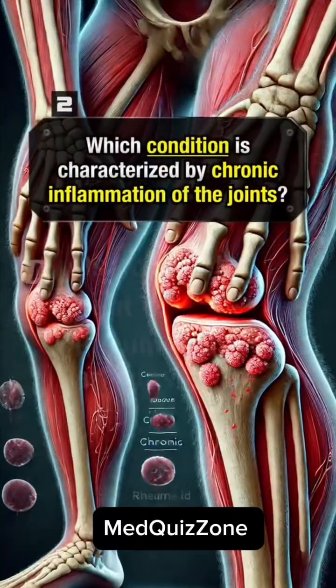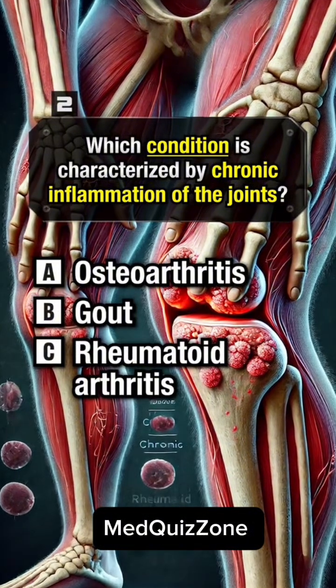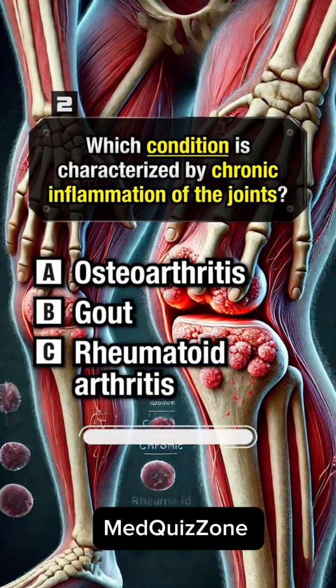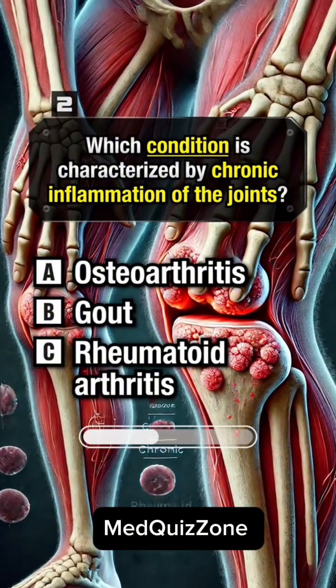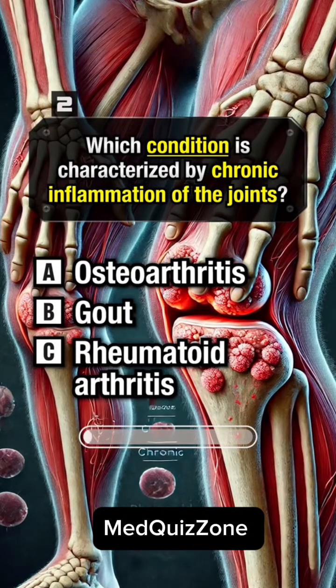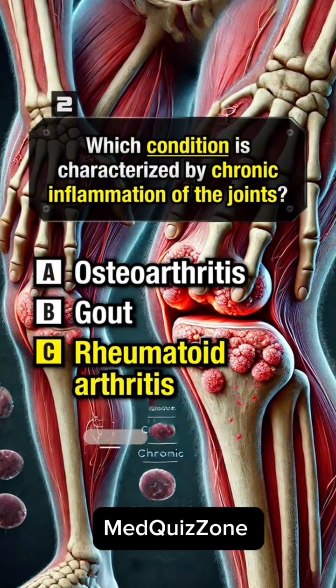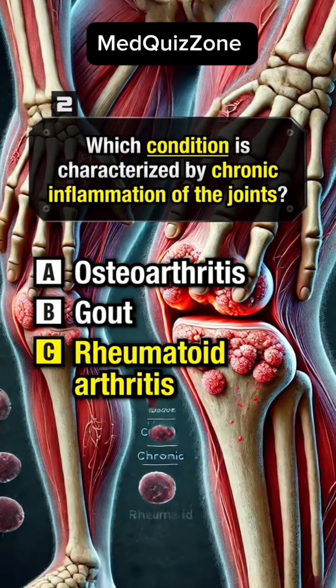Which condition is characterized by chronic inflammation of the joints? Answer C. Rheumatoid arthritis.